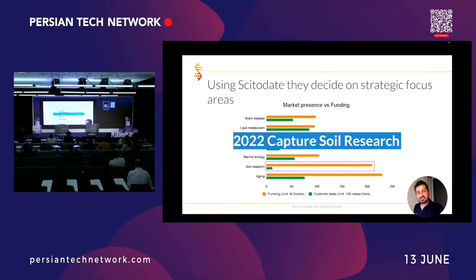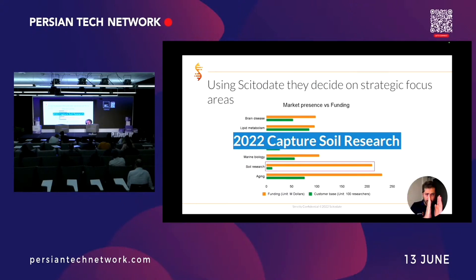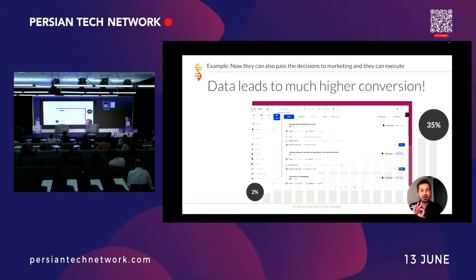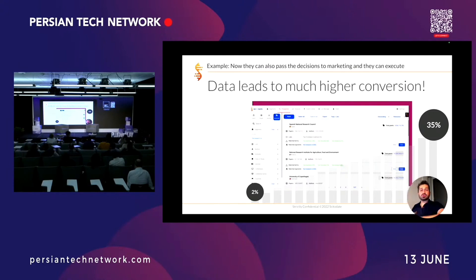They were missing out on that, and last year they started an initiative to focus on and sell this product to that segment. Because now they exactly know this product is for soil research, who the top clients are, what their needs are, and how to address them. They ran a marketing campaign with more than 15 times improvement — their conversion went from two percent up to 35 percent, which is unheard of, because now they are talking to exactly the right person in the right way.